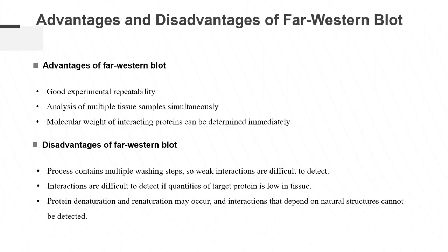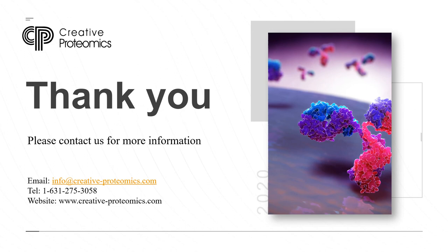Advantages of far western blot: good experimental repeatability, ability to analyze multiple tissue samples simultaneously, and molecular weight of interacting proteins can be determined immediately. Disadvantages: the experimental process contains multiple washing steps, so weak interactions are difficult to detect; interactions are difficult to detect if the quantity of the target protein is low in tissue; and protein denaturation and renaturation may occur in experiments, so any interactions that depend on natural structures cannot be detected. Creative Proteomics provides the above techniques to detect protein-protein interactions. Please contact us for any suggestions or service requests. Thank you for your time.